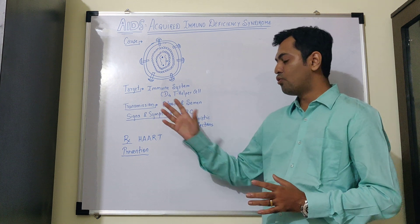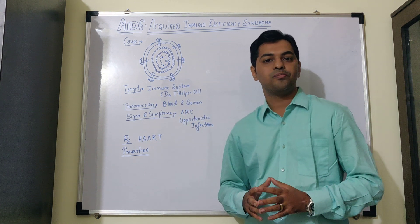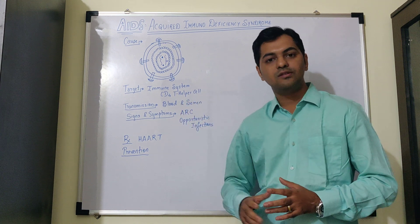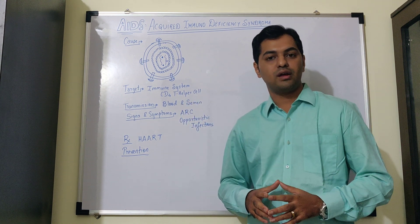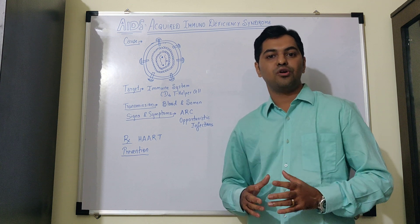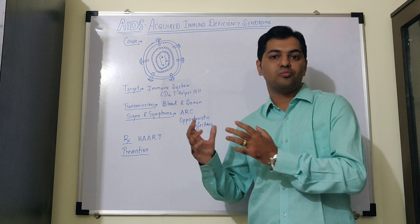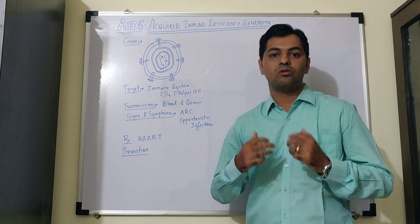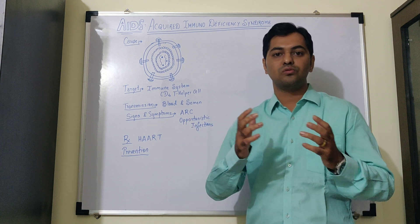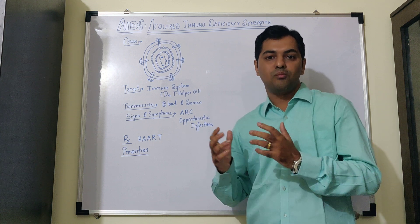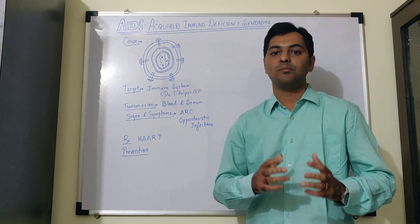Now, what are the modes of transmission of HIV? It can be mainly transmitted through blood and semen, that is, by unprotected sexual contact with the infected person or through sharing of needles or from infected mother. The virus may cross the placenta and through transplacental route, it may reach into the child's body. It is also observed that mother's milk, colostrum, may also transmit the virus into the baby.